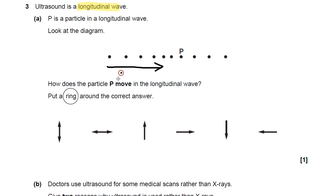Now in any wave, there's a direction of energy transfer, usually shown left to right. Energy is moving left to right in this case, and there's a direction of the oscillation. In a transverse wave, particles move transverse — at right angles to the direction of energy transfer. And in a longitudinal wave, they move parallel to the direction of energy transfer.